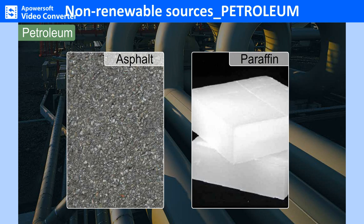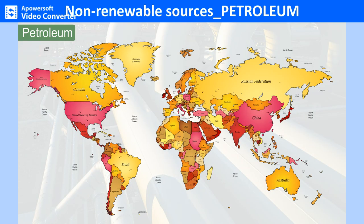The principal petroleum-producing countries in the world are in the Persian Gulf region. Saudi Arabia is the leader, followed by Iran, Iraq, United Arab Emirates, Kuwait, Qatar and Bahrain. Some other important producers are Russia, the US, China, Indonesia, Egypt, Libya, Myanmar and Brazil.